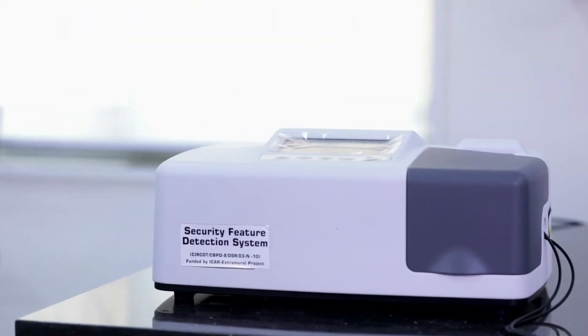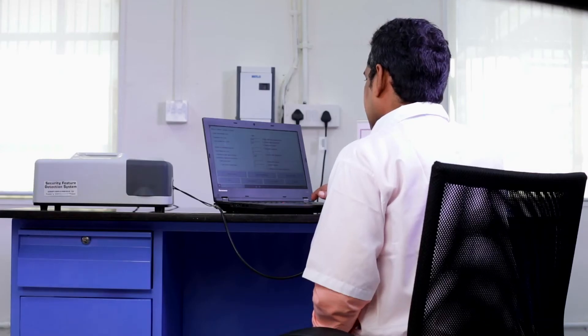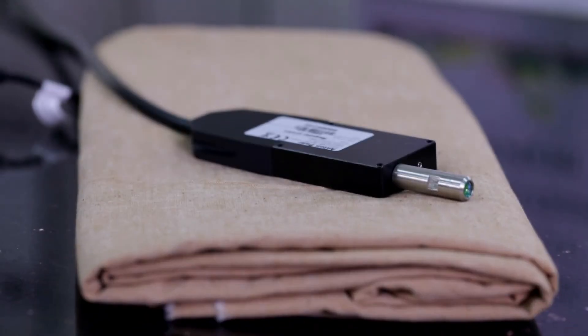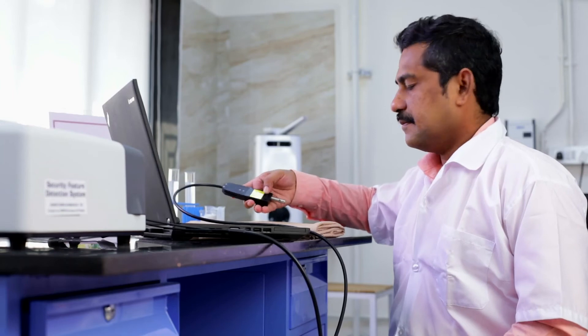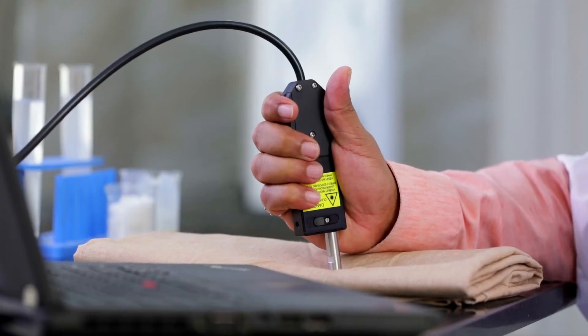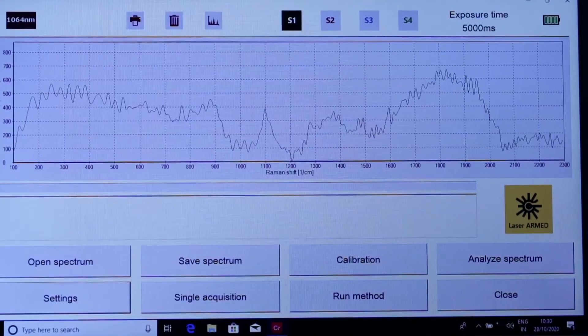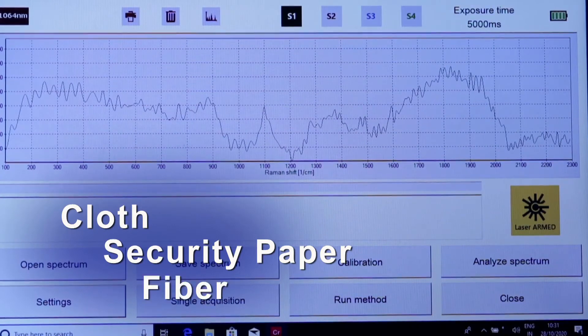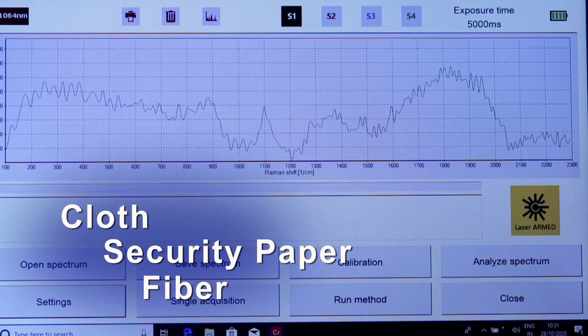This instrument is working on the principle of collecting scattered light after laser excitation of the sample and confirms the identity of different compounds. It is used in the qualitative and quantitative analysis of substances in trace amounts on different matrices such as cloth, security paper, fiber, etc., without extensive sample preparation in a non-destructive manner.